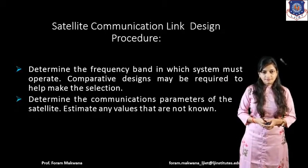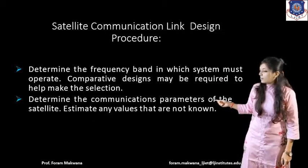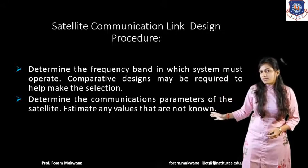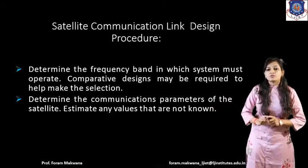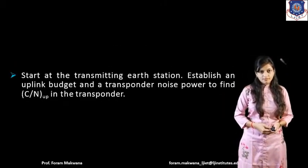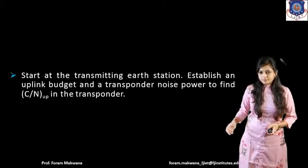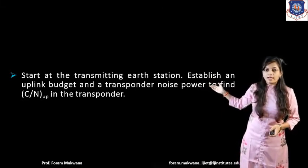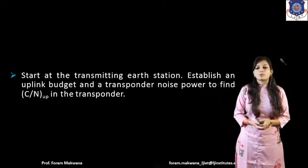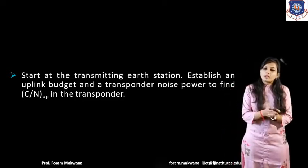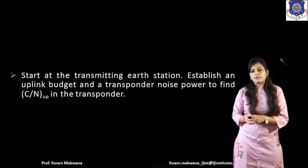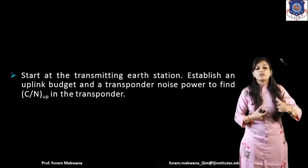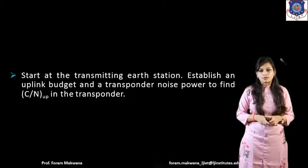Second, determine the communication parameters for the satellite — estimating values for any unknowns. Third, starting at the transmitting earth station, establish and obtain the link budget and determine the noise power. To calculate the carrier-to-noise power, we must know the value of carrier power and the value of noise power, and we need to determine the parameters of the transmitting and receiving earth station.